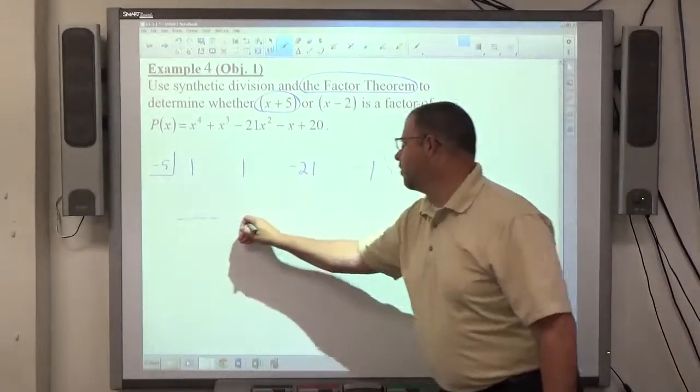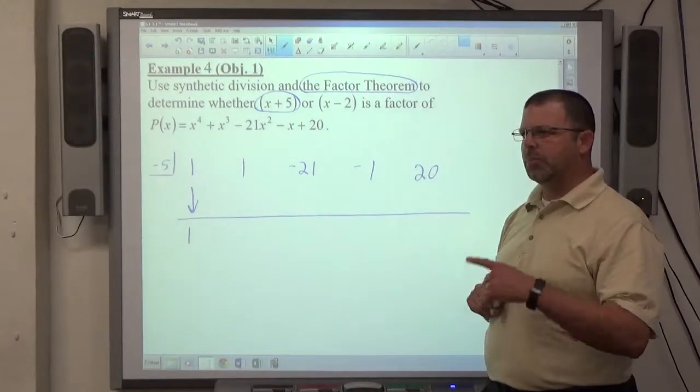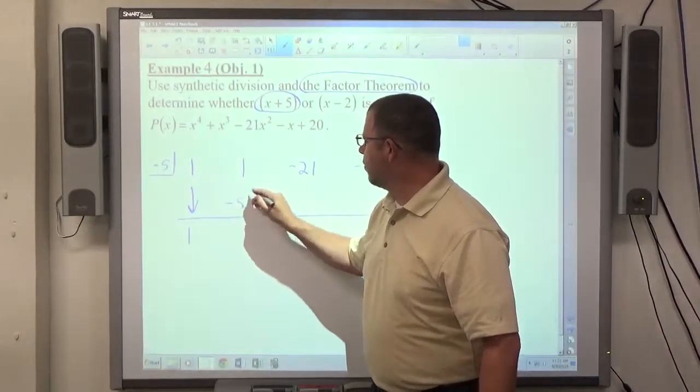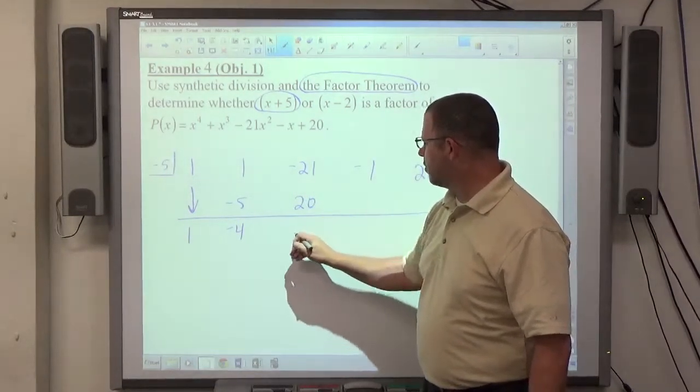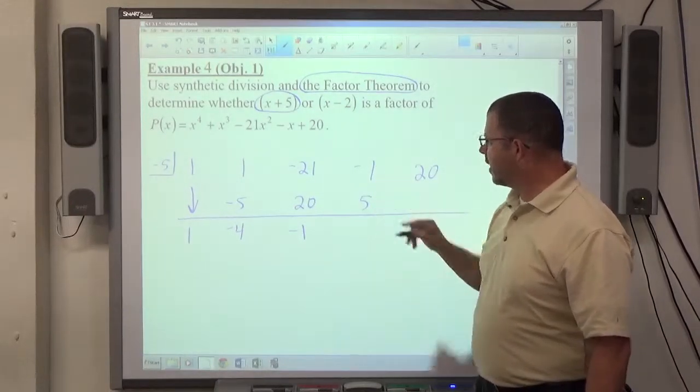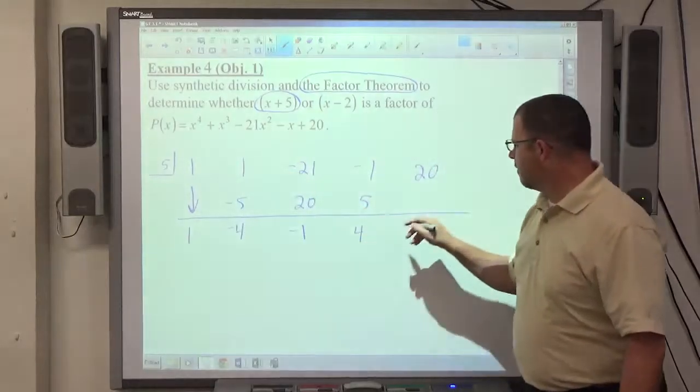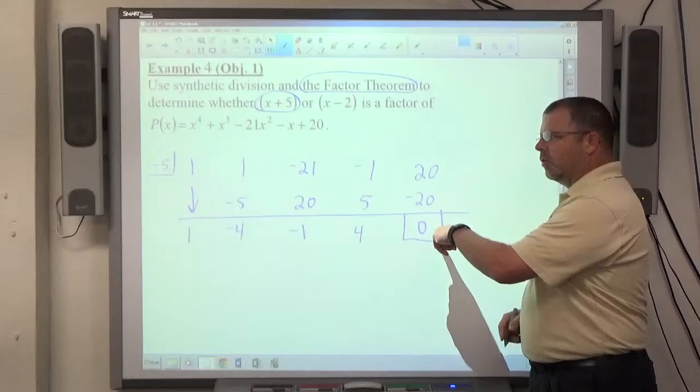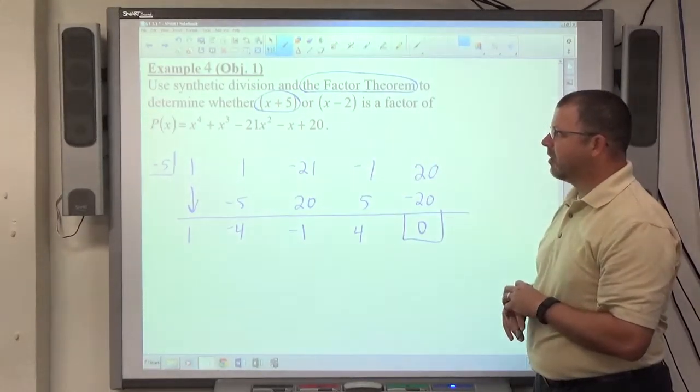And if we perform synthetic division here, we bring the first number straight down always, and then we simply multiply and add to get the remaining numbers. Negative 5 times 1 is negative 5, 1 minus 5, negative 4. Negative 5, negative 4, positive 20. Negative 21 plus 20 is negative 1. Negative 5, negative 1 make positive 5. Negative 1 and 5 make positive 4. Negative 5 and 4 is negative 20, remainder of 0. Remainder of 0 after performing synthetic division verifies that x plus 5 is a factor.